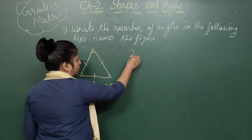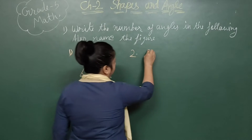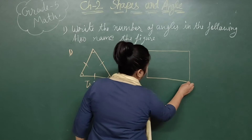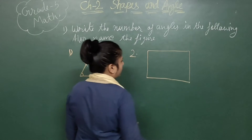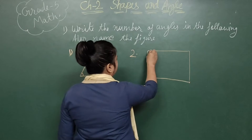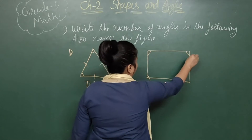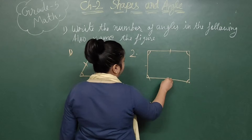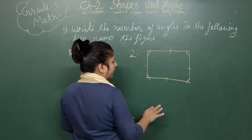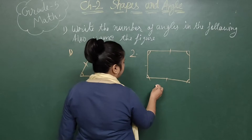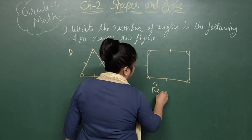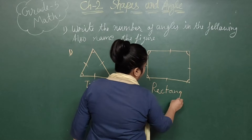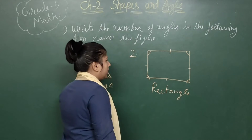Now see the second shape. It is having four sides and four corners, or you can say four angles — one, two, three, four sides and one, two, three, four angles. So you can say this is our rectangle.